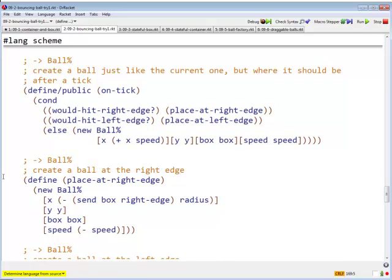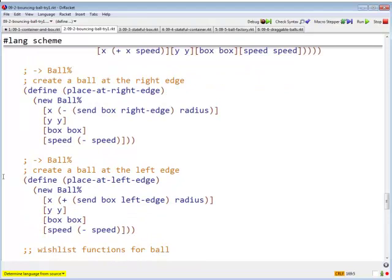How do we place a ball at the right edge? Well, a ball at the right edge is a ball whose x-coordinate will be the right edge of the box. We're going to ask the box what its right edge is, and then we're going to subtract the radius. So the ball appears tangent to the right edge. And oh yes, it's going to reverse direction. Similarly, how are we going to place the ball at the left edge? Well, we are going to ask the box where its left edge is, add our radius to it so that the ball appears tangent to the left edge. And our speed is going to be negative than what it was before.